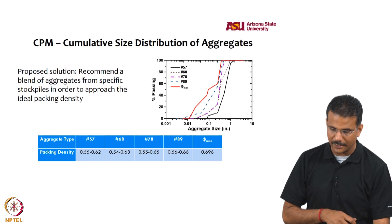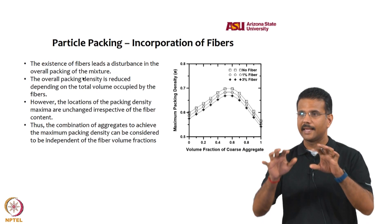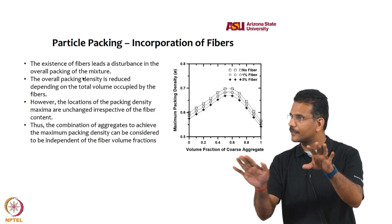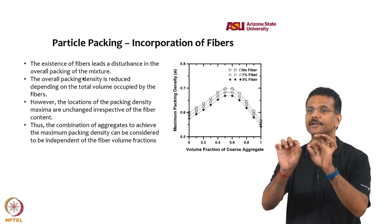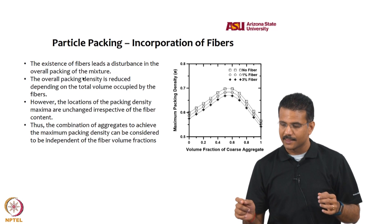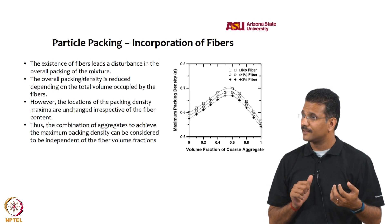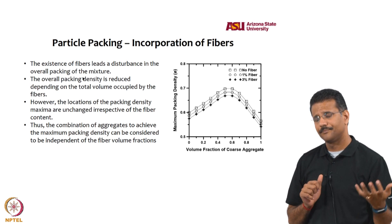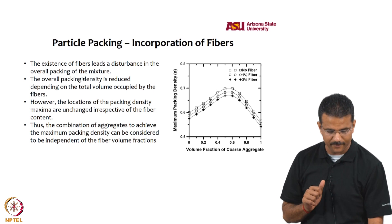When long steel fibers are incorporated into the aggregate matrix, they displace some aggregates due to their different aspect ratio, reducing the maximum packing density slightly. However, the ductility benefits provided by the fibers are so significant that the reduced packing is accepted as a necessary trade-off.